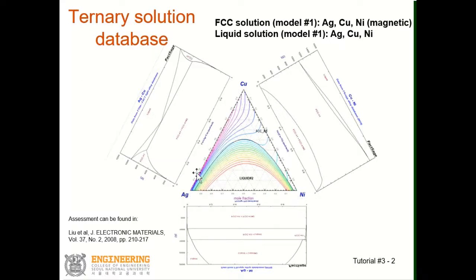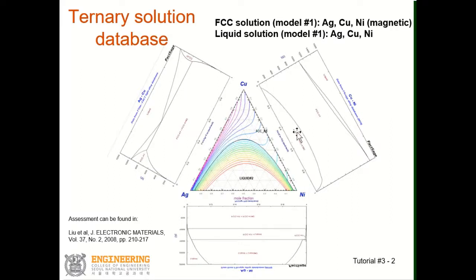In each binary system, for example the silver and copper binary system, you have a phase diagram with a liquid phase and FCC1 and FCC2 phases. So FCC has the miscibility gap, and liquid has the complete solution. If you look at the copper and nickel binary system, at low temperature you have the miscibility gap between the two FCC sides — the copper-rich side and nickel-rich side — and with increasing temperature it becomes one FCC solution, and then liquid has almost ideal solution.